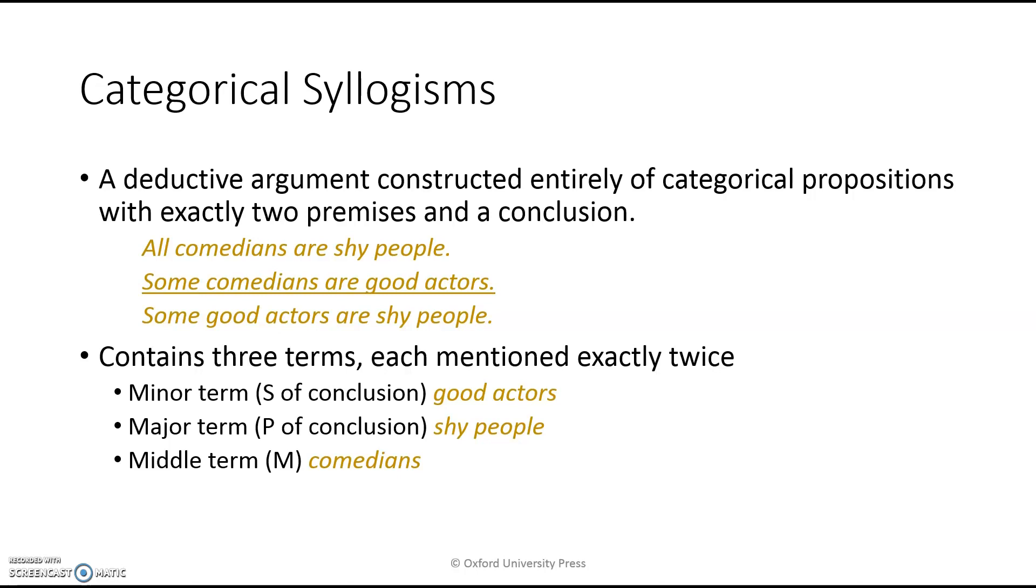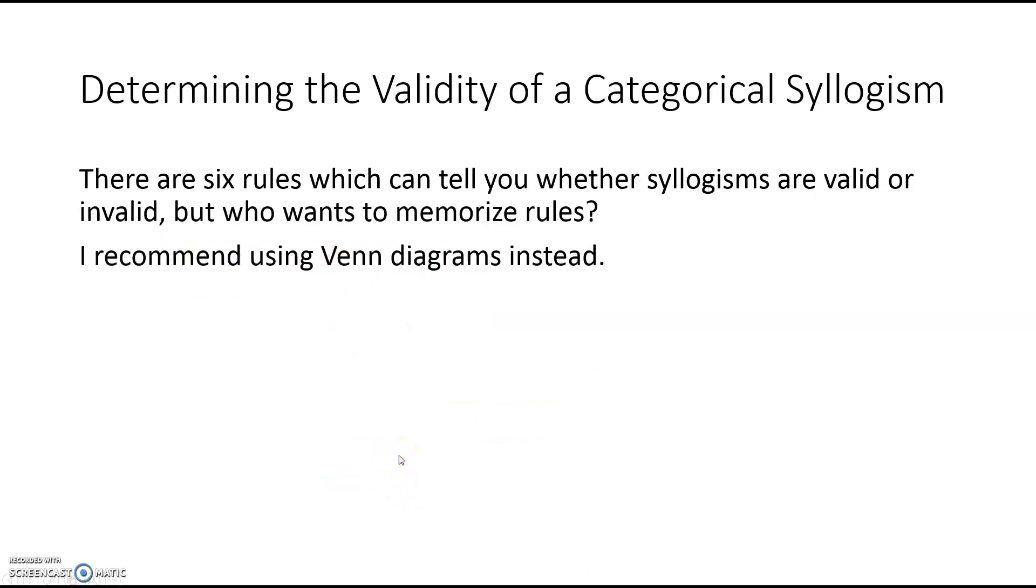Now a categorical syllogism is a deductive argument that's constructed entirely out of these categorical propositions, and it's got exactly two premises and a conclusion. For example: All comedians are shy people. Some comedians are good actors. Therefore, some good actors are shy people. And a categorical syllogism will contain three terms, three class terms, and each will be mentioned exactly twice if it's constructed correctly. So in this case it's good actors, shy people, and comedians. And all the statements are about those classes.